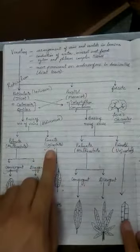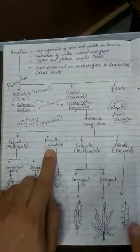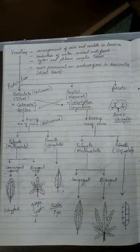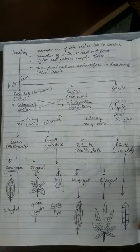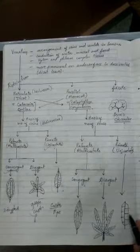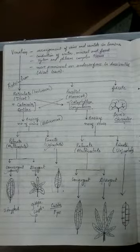How do you distinguish unicostate reticulate and unicostate parallel venation? Here there will be a network developing because the main vein divides into branches and branches go in different directions, different angles also. But in the case of the pinnate parallel venation, the branches will go only parallel to each other.